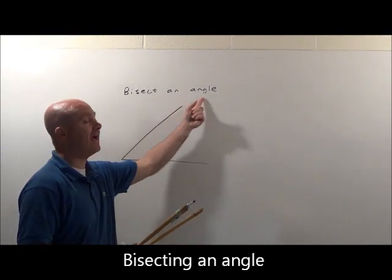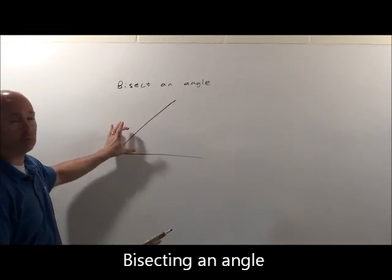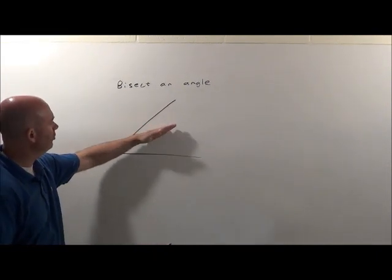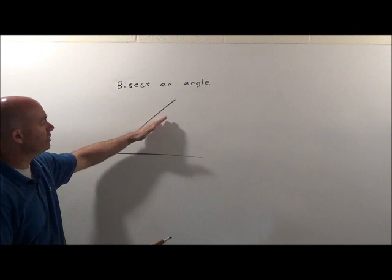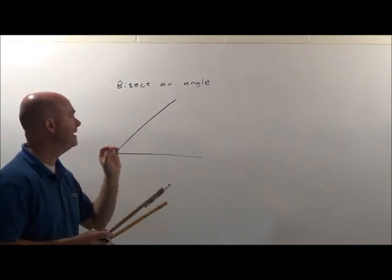All right, we want to bisect an angle this time. That means we want to cut this angle in half. If this were a 50 degree angle, we want to draw the line that's going to cut it at 25 degrees and 25 degrees. That's what it means to bisect an angle.